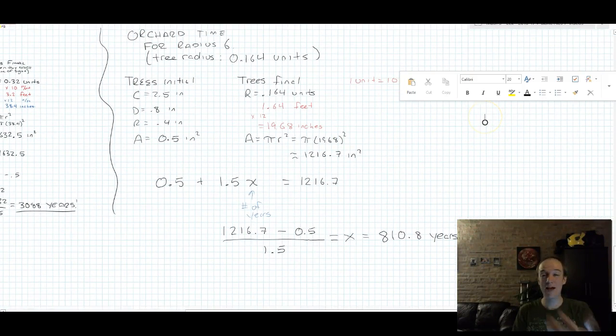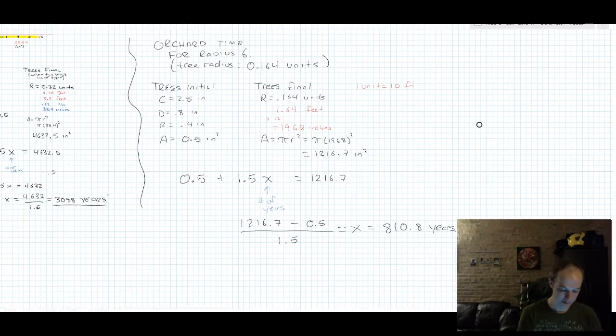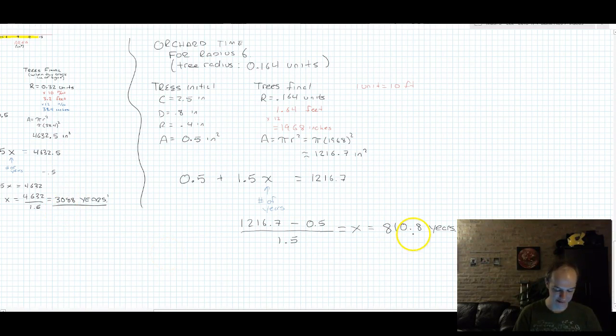But as we add more trees to the orchard, notice that we went down from 3,000 to 800. As we add more and more trees to this orchard, it's going to take less and less time, so that maybe Maddie and Clyde possibly could still be alive to see their orchard become a final orchard hideout.